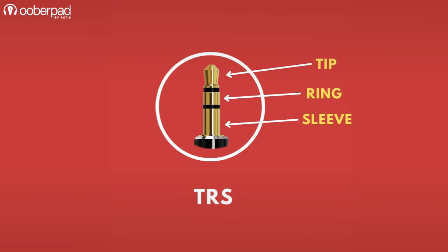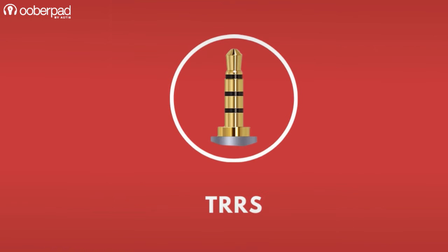The sleeve is the ground, the tip is the positive leg and the ring is the negative leg. TRS is largely found in older and legacy devices.